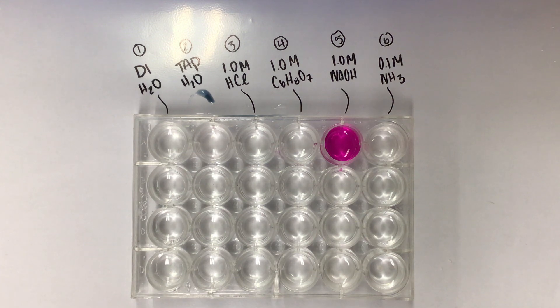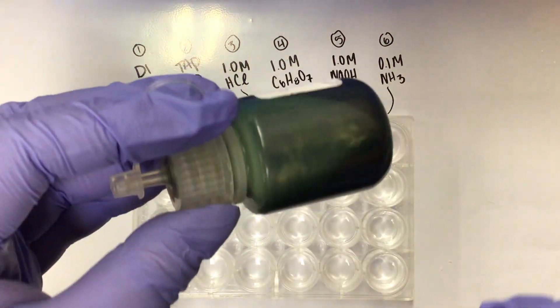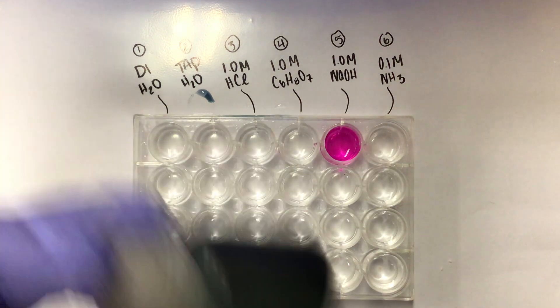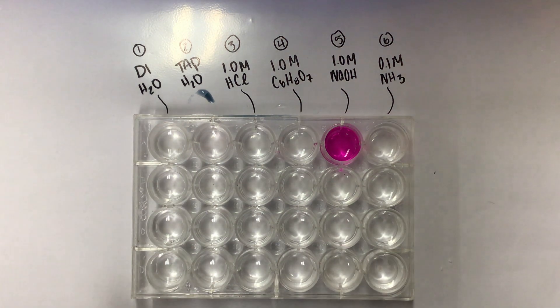Next test, moving on to well two. This time we're going to do universal indicator. Here's our universal indicator. It starts out as this bluish green color. I am also going to grab a universal indicator pH scale.